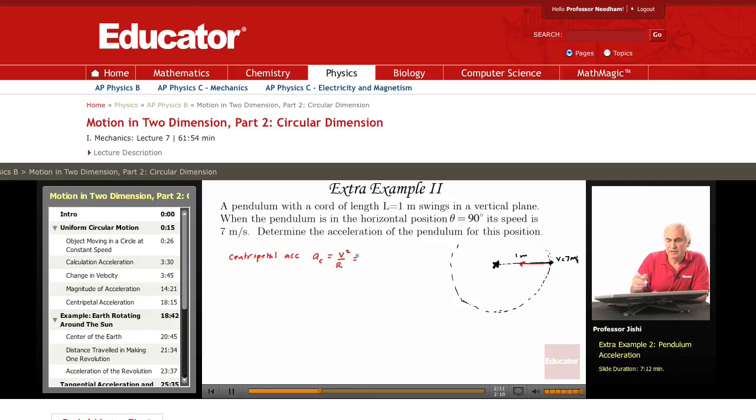V squared is 49 meters squared per second squared, and the radius is just 1 meter, it's the length of the chord. So this is 49 meters per second squared, and this is the centripetal acceleration.